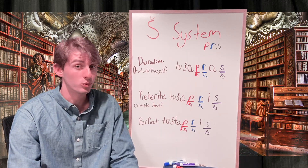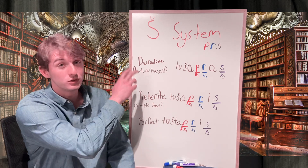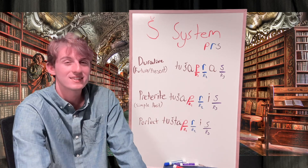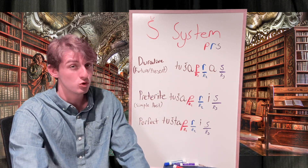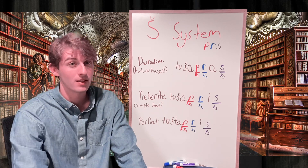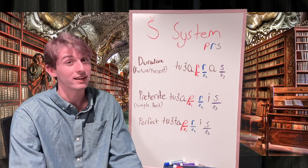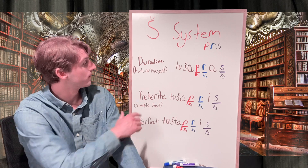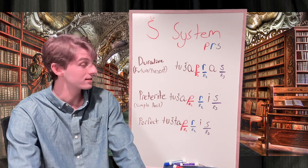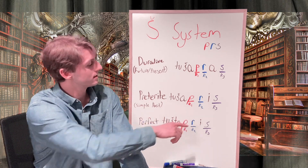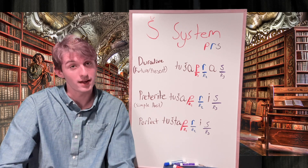Using root letters p, r, s from parāsum — 'to divide' in the G system — let's look at how we translate different tenses of Sheen system verbs. I've added tu as the prefix, giving us a second person singular masculine subject 'you.' For the durative we have tušapras, translated as 'you will cause to divide' or 'you cause to divide.' In the preterite, tušapras is 'you caused to divide' or 'you helped to divide.' In the perfect tense we have tuštapras, meaning 'you have caused to divide' or 'you have helped to divide.'